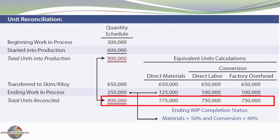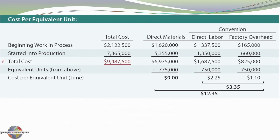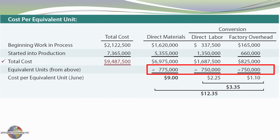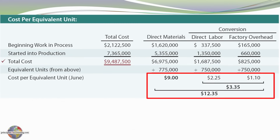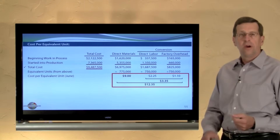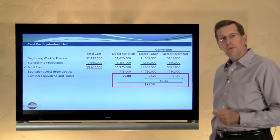That information is vital as we calculate the cost per equivalent unit. Our beginning work in process contained $2,122,500, and an additional $7,365,000 was added into process during the month, distributed between material, labor, and overhead. So the total cost to account for is $9,487,500, broken down between material, labor, and overhead. We divide each of those cost pools by the equivalent units related to that cost pool to arrive at the cost per equivalent unit. Our materials average cost is $9 a ton, our conversion cost average is $3.35 a ton, and our total cost for one complete equivalent unit of output is $12.35. We'll incorporate this part of the schedule into our final cost of production report in a subsequent module.